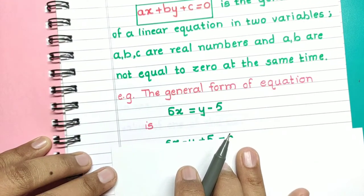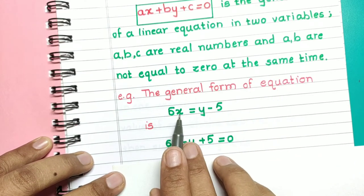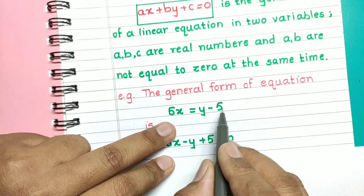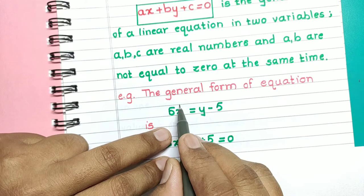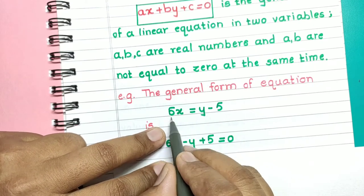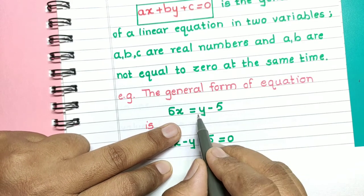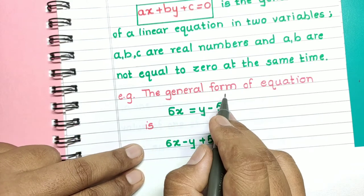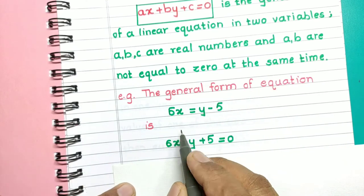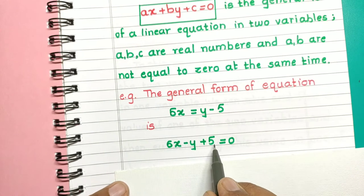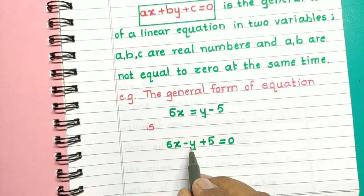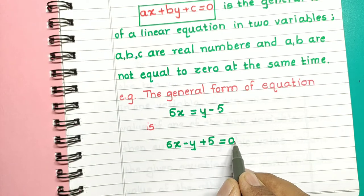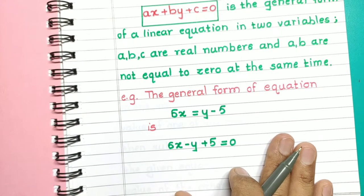Consider the equation 6x is equal to y minus 5. You can observe that it is a linear equation in two variables since it contains two variables x and y and the degree of each term containing a variable is 1. The general form of this equation is 6x minus y plus 5 is equal to 0, where y and 5 are shifted to the LHS and terms are arranged as the x-term, then the y-term, then the constant, all equal to 0.